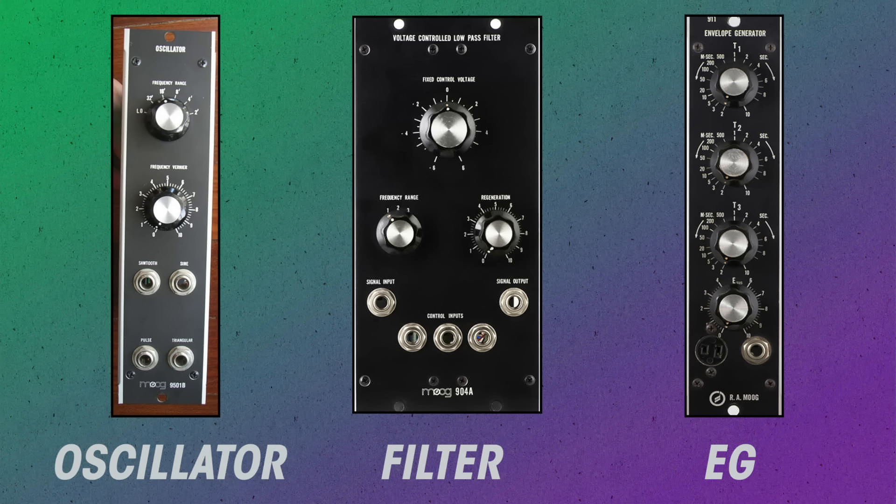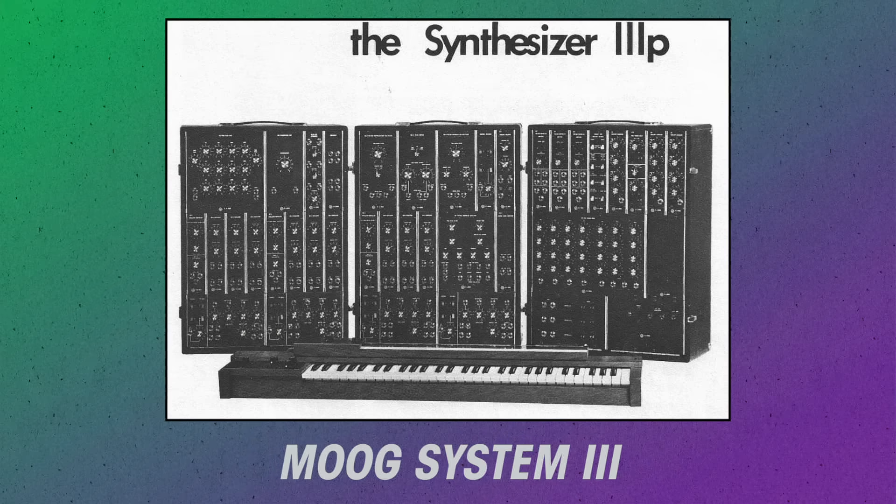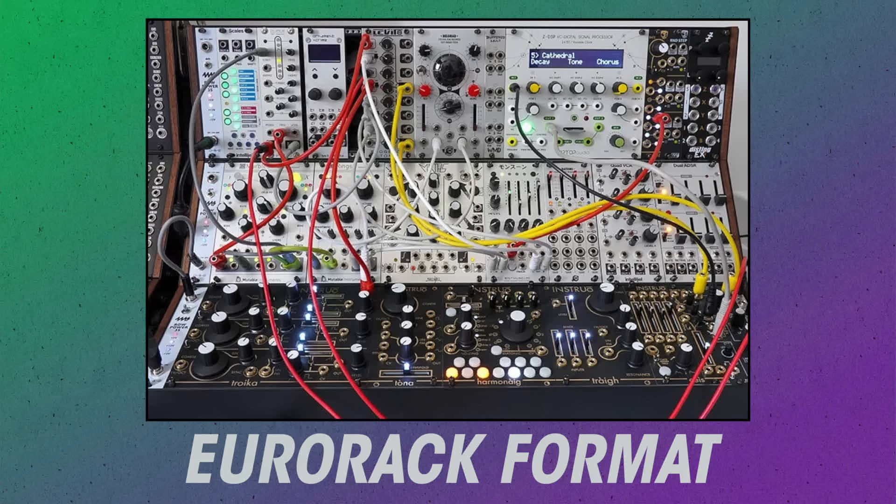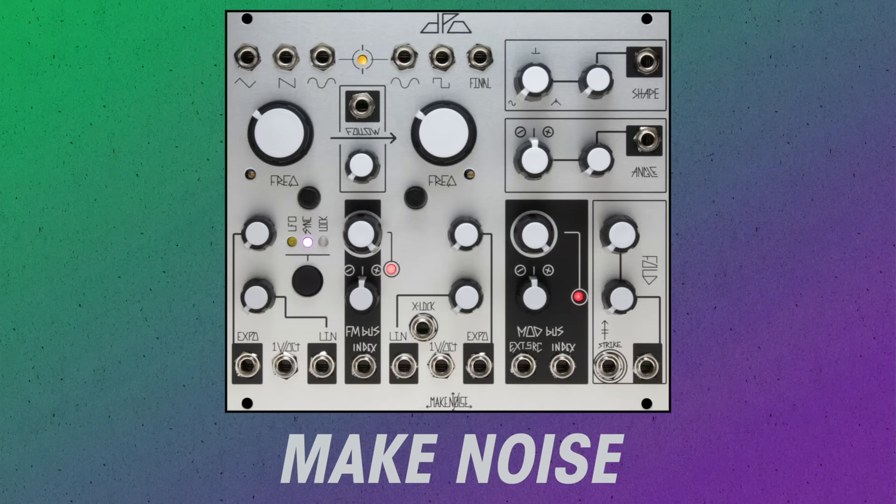The modules in the original modular synths typically had one straightforward function, like a single oscillator, filter, or envelope generator. These synths were sold as a complete system and were not cross-compatible. Now Eurorack is a standard format that all kinds of manufacturers make modules for. Given the increased competition, companies tend to make advanced modules with many integrated functions.